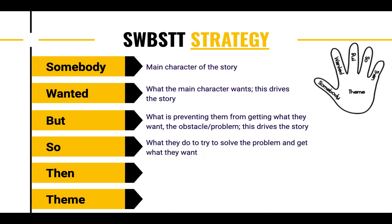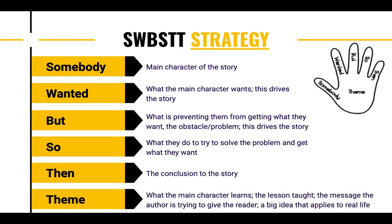So is what they do to try to solve the problem and get what they want — to reach their goal at the end. Then is just the conclusion to the story: how does it end? And the theme is what the main character learns, the lesson taught, the message the author is trying to give the reader — a big idea that applies to real life. Sometimes the theme is connected to the conclusion of the story, the then part, but not always. That's why I left it as a whole separate part of the strategy, because it doesn't always wrap up neatly with a theme at the end. This is something you have to infer based on everything else that happened in the text.